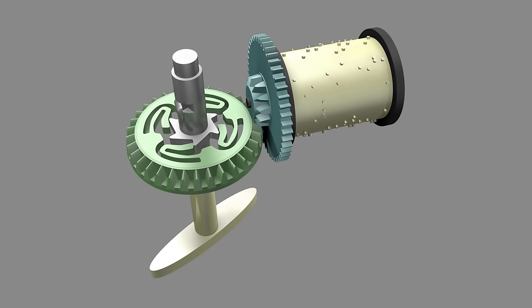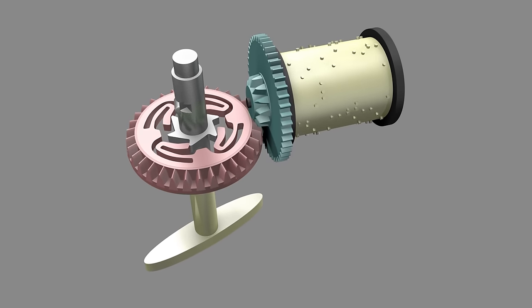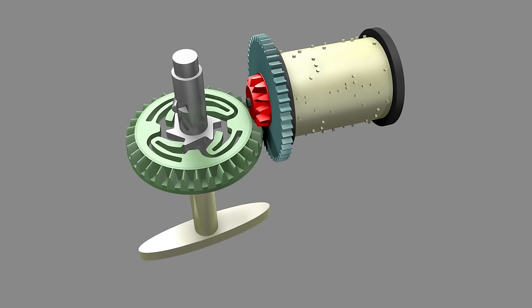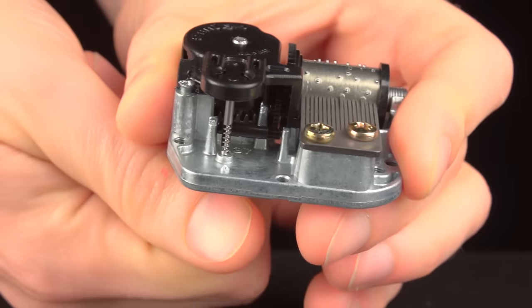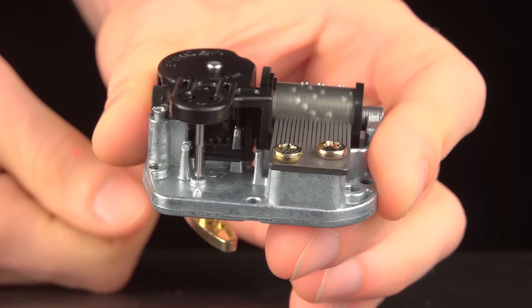As the spring unwinds, it rotates this bevel gear, which engages a second bevel gear affixed to the drum. But there's a problem with this setup. The spring will unwind quickly, and the music will play too fast.